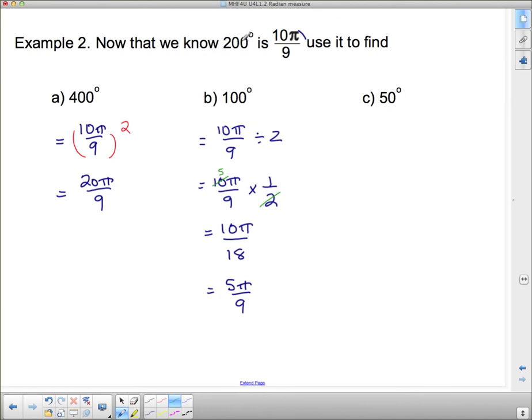Now how about 50? Well, 200 has to be divided by 4 to get to 50. So if 200 divides by 4 to get to 50, I have to divide 10 pi by 9 by 4. But again, remember, dividing by 4 is the same as multiplying by a quarter.